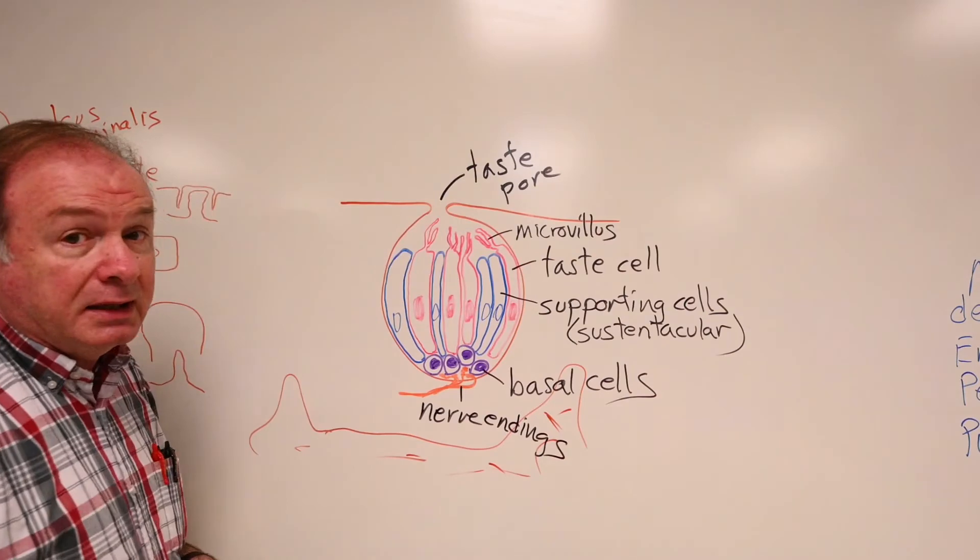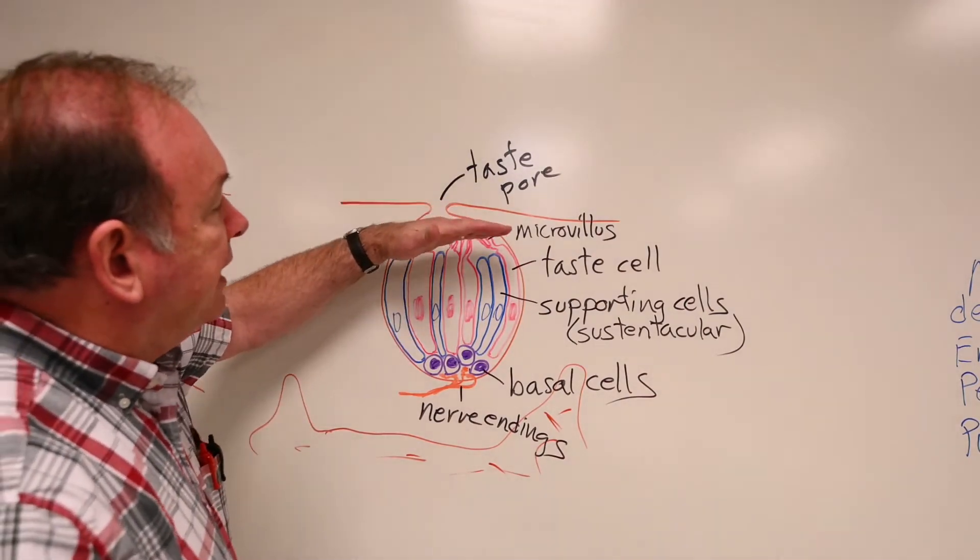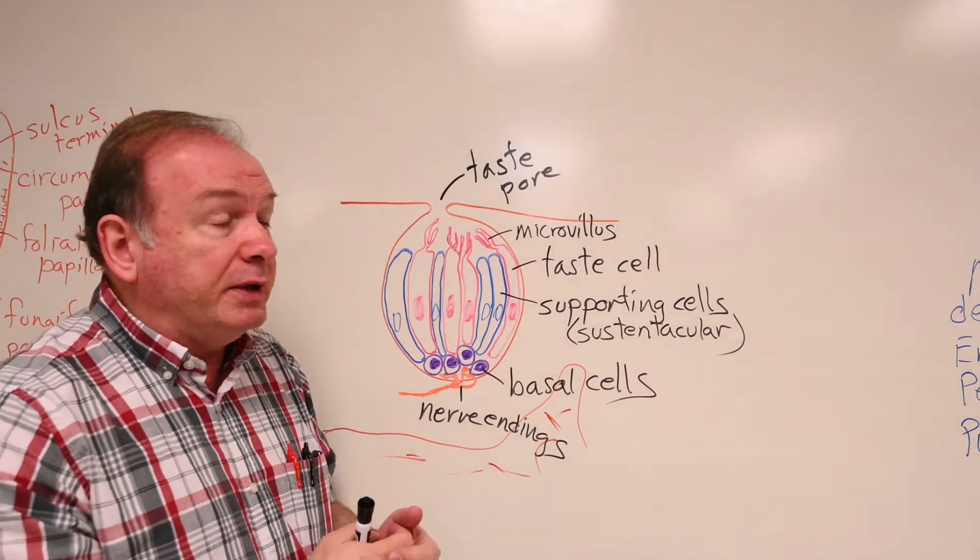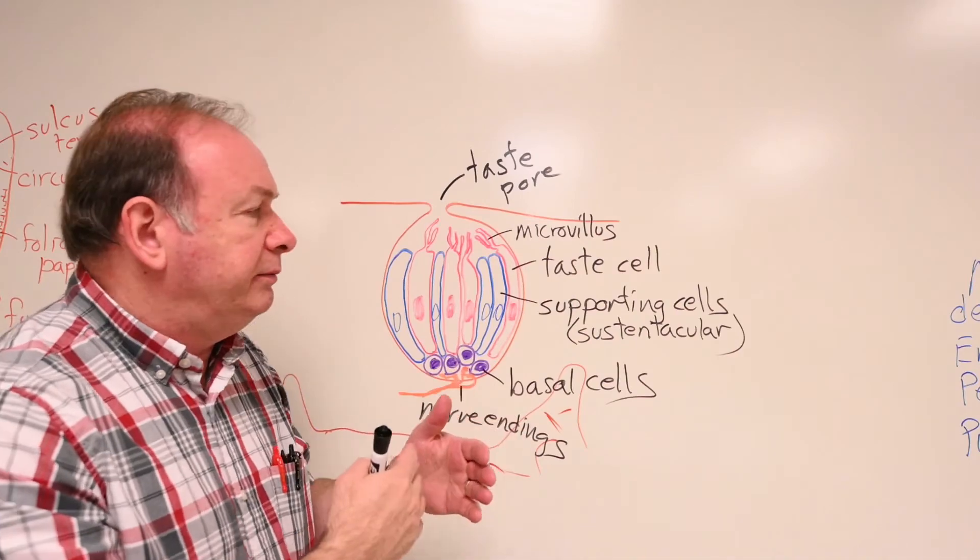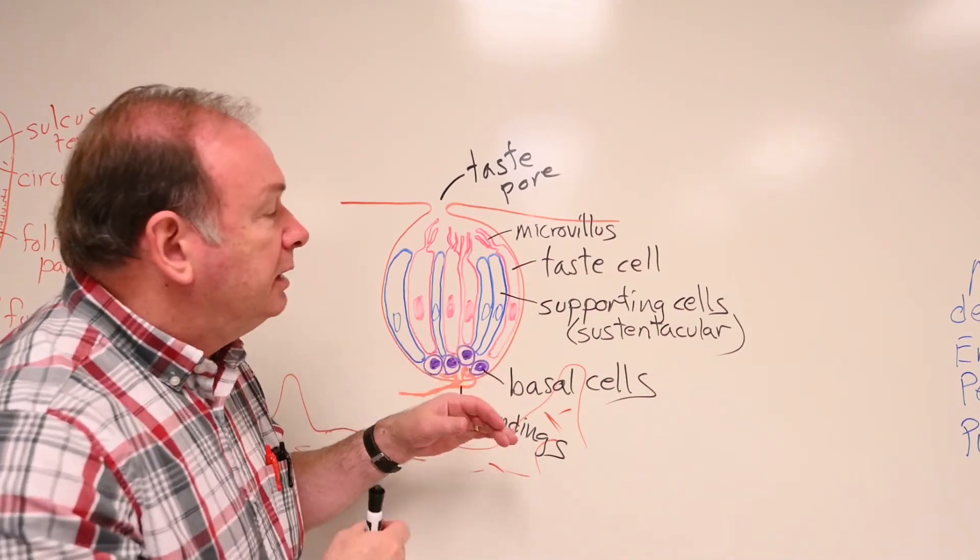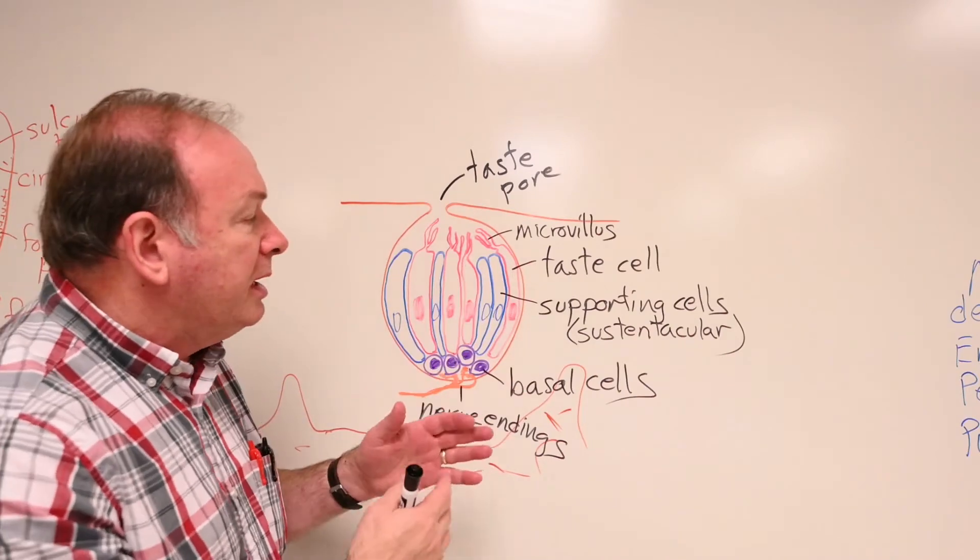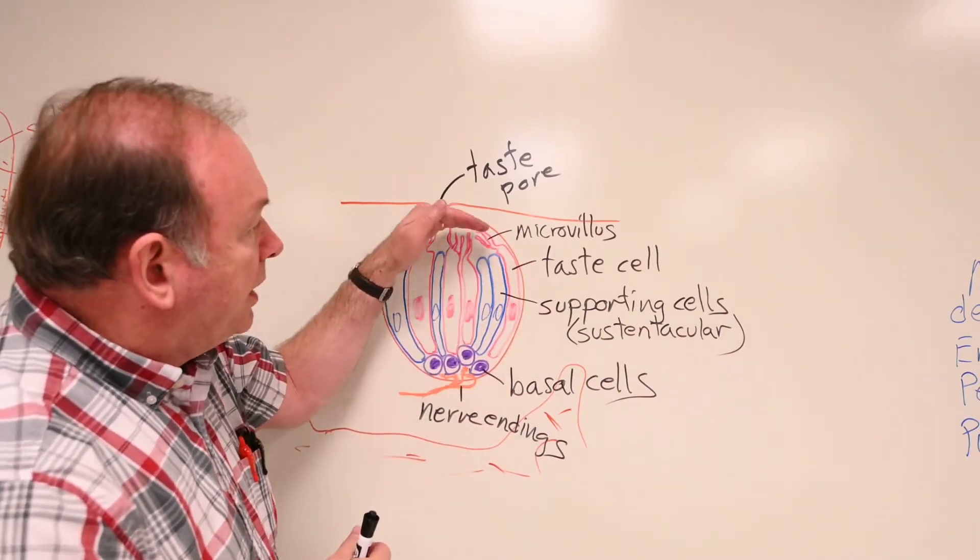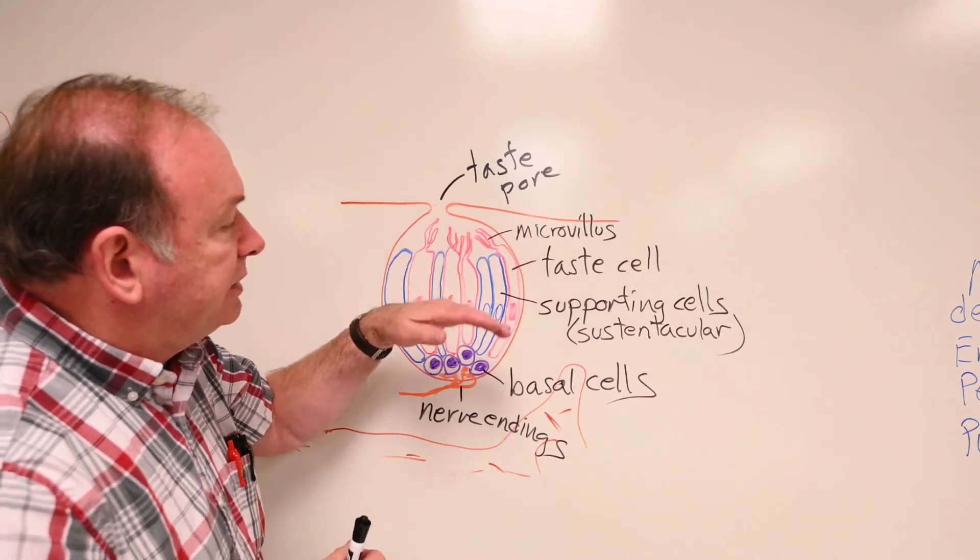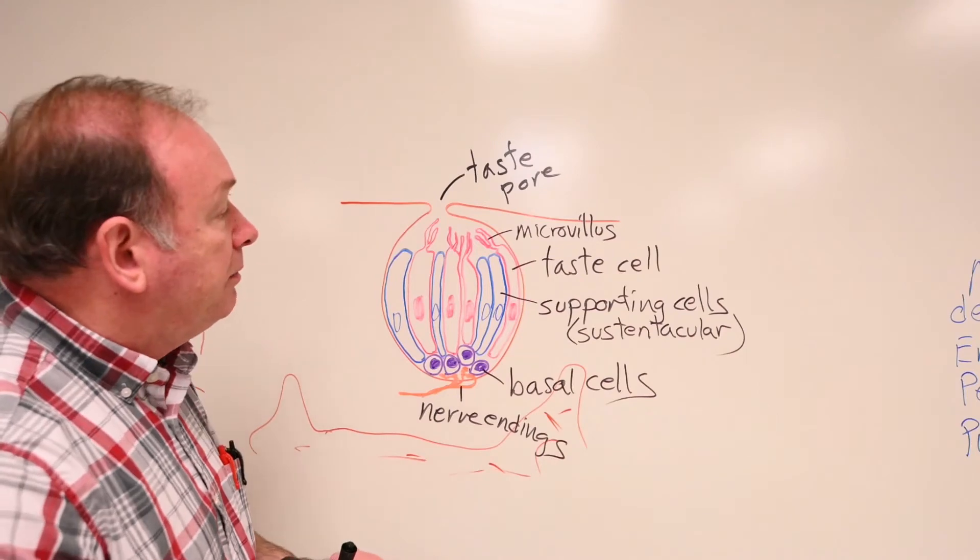So, when these cells interact with chemicals that result in some kind of signaling in there, sometimes it's a binding, sometimes they pass through the membrane, some kind of depolarization event is initiated when these microvilli and the ends of the cells come in contact with specific taste molecules.